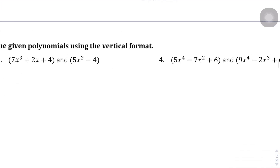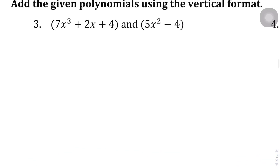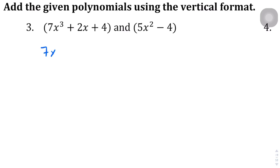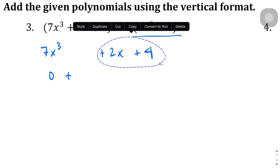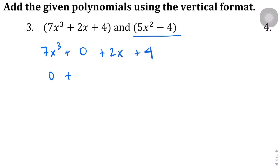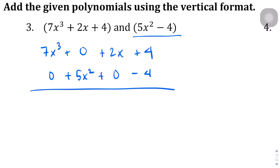Page 19 — this one doesn't have the nice scaffolding that the previous page had, but let's go ahead and line these up. The first expression is 7x cubed plus 2x plus 4. The second expression has no term with x cubed, so we put 0 for that. The first expression also has no x squared term, so we put 0 there. The second expression has 5x squared but no x term. Now adding straight down: 7x cubed stays; 0 plus 5x squared is 5x squared; 2x plus 0 is 2x; and 4 minus 4 is 0, so we don't write that. This is our simplified expression.